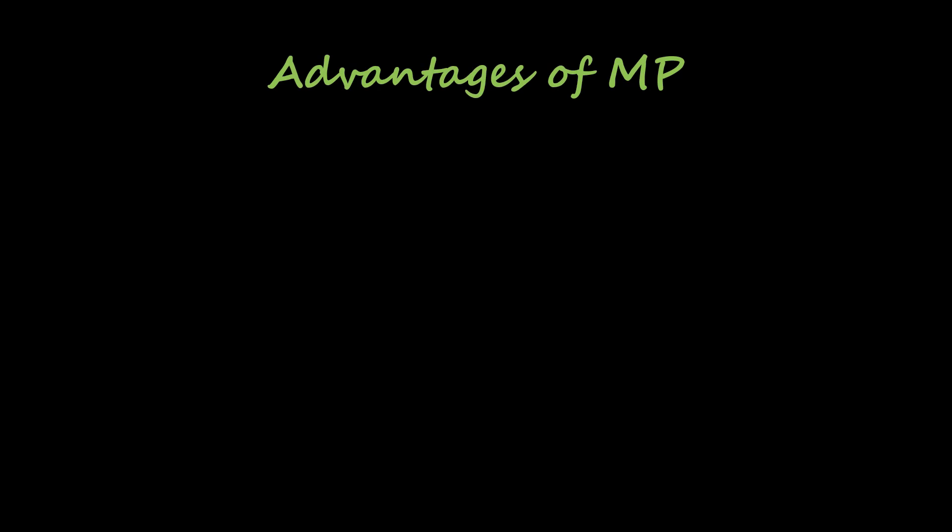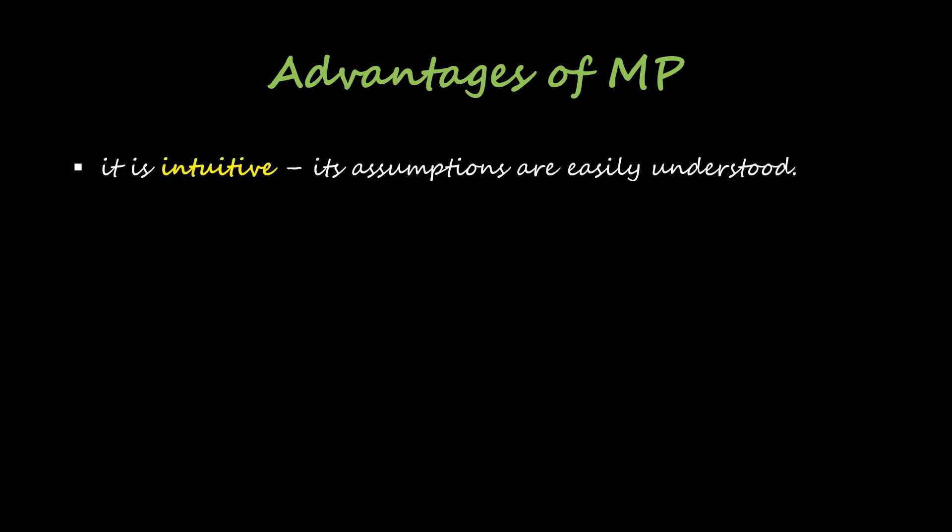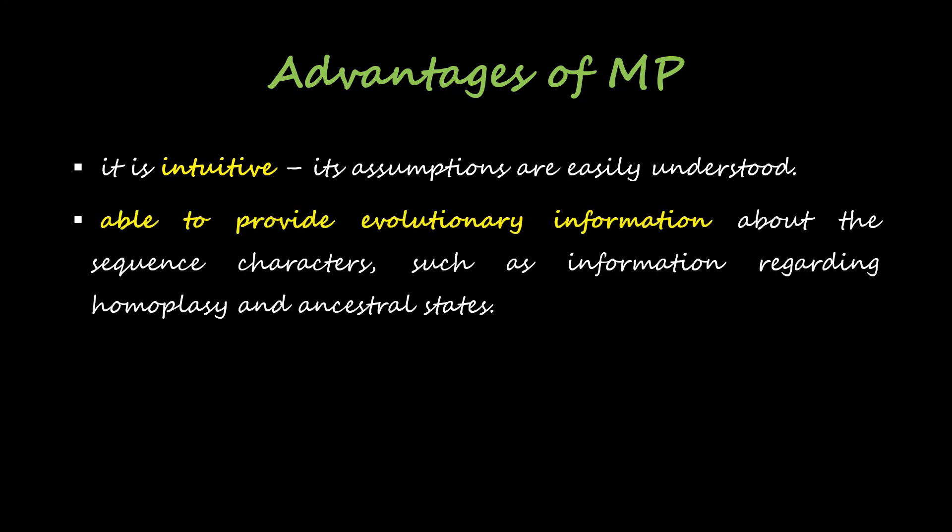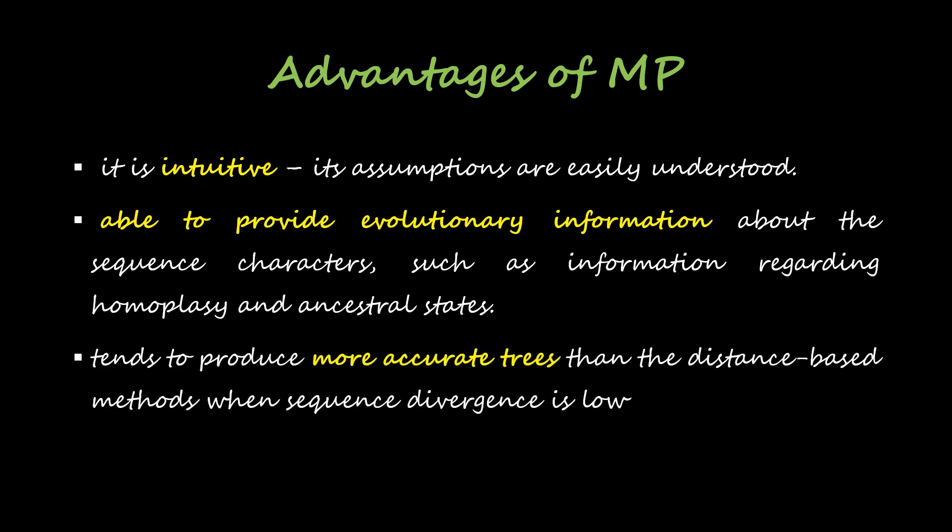Advantages of Maximum Parsimony: It is intuitive — based on assumptions that are easily understood. It is able to provide evolutionary information about sequence characters, such as information regarding homoplasy and ancestral states. It tends to produce more accurate trees than distance-based methods when sequence divergence is low, since we are not converting sequences into distances and losing information.